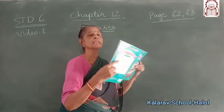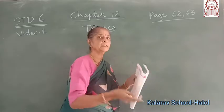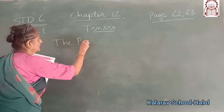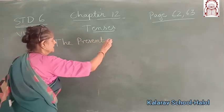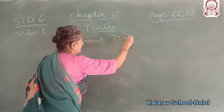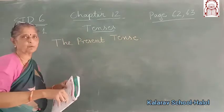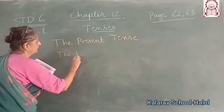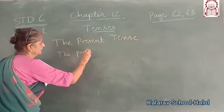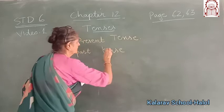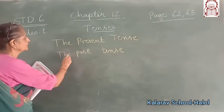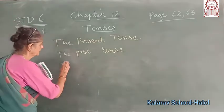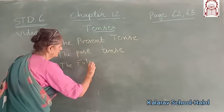The name is tenses. How many tenses are we going to learn? Three. The present tense — what we are doing now. The past tense — what we did yesterday. And the future tense — what we will do tomorrow.